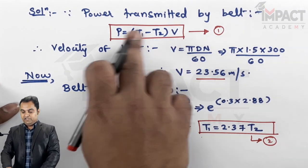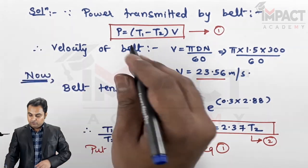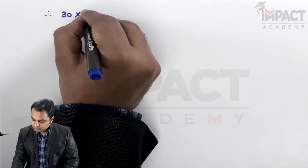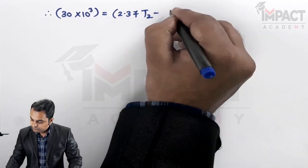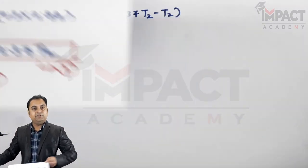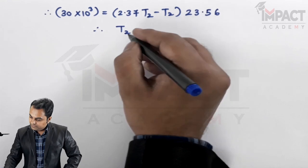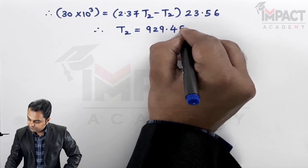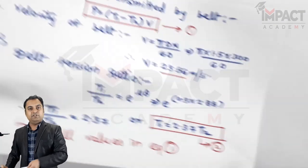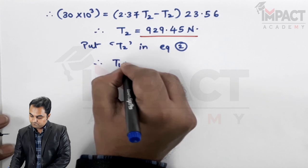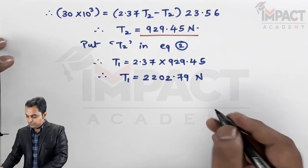Substituting into equation 1: 30 × 10³ = (2.37 T2 − T2) × 23.56. Solving gives T2 = 929.45 N. Substituting back into equation 2 gives T1 = 2.37 × 929.45 = 2202.79 N.